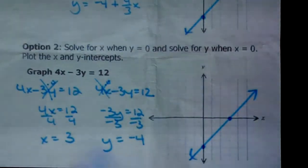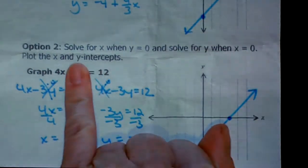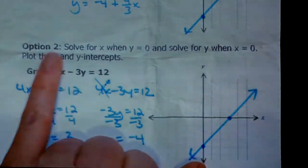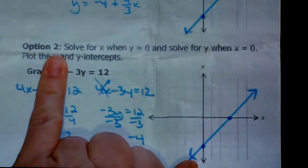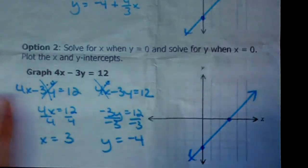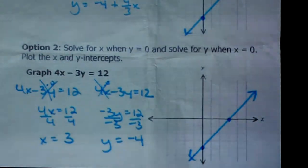So instead of rearranging it, you can basically, if it's in ax plus by equals c form, to find the x-intercept, cover up the y and solve for x. To find the y-intercept, cover up the x and solve for y. It's really that easy. So I'd like us to try doing the option 2 for these examples because you've done option 1 quite a bit in the other lessons. So here we go.